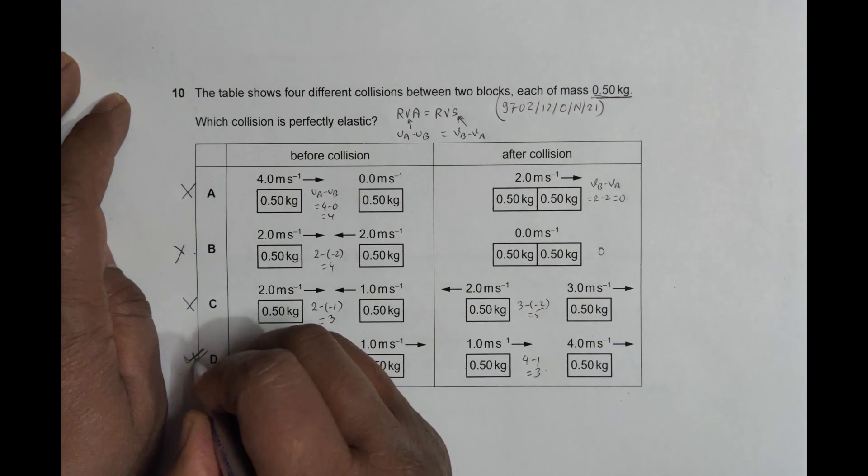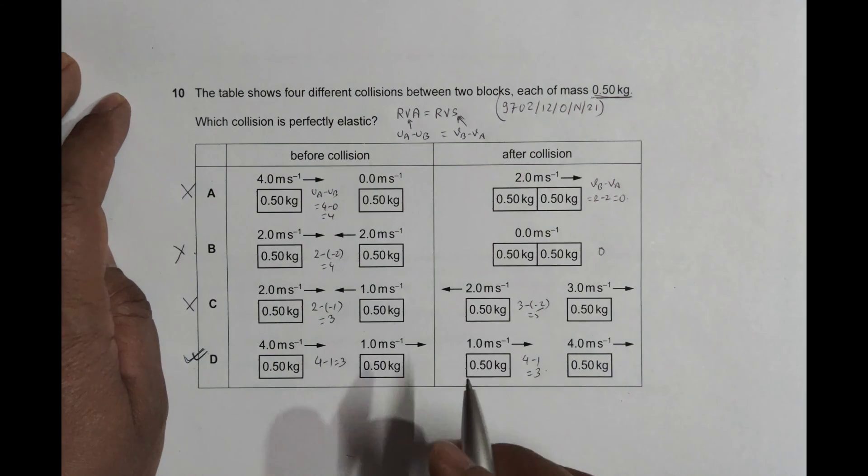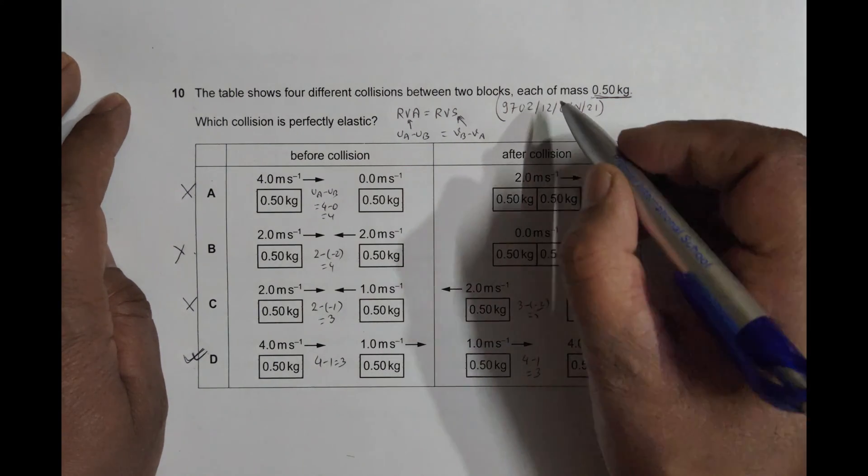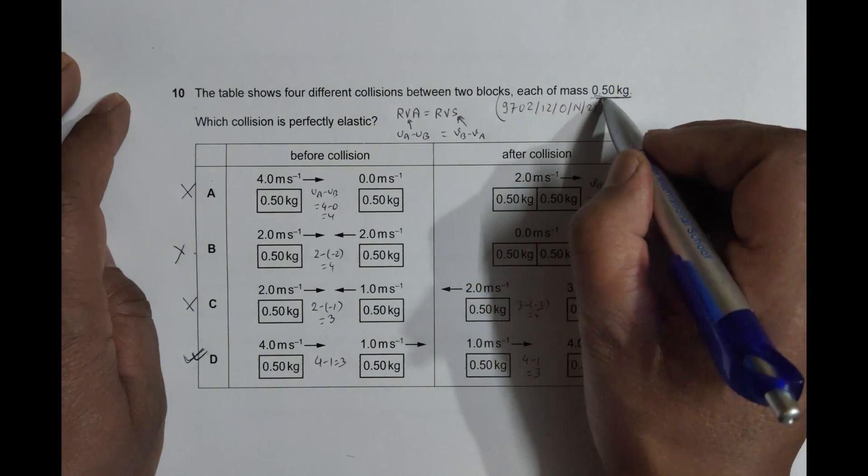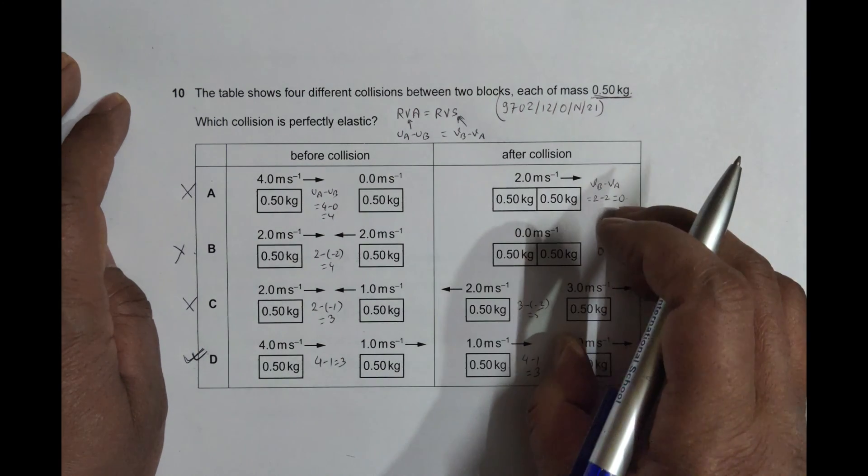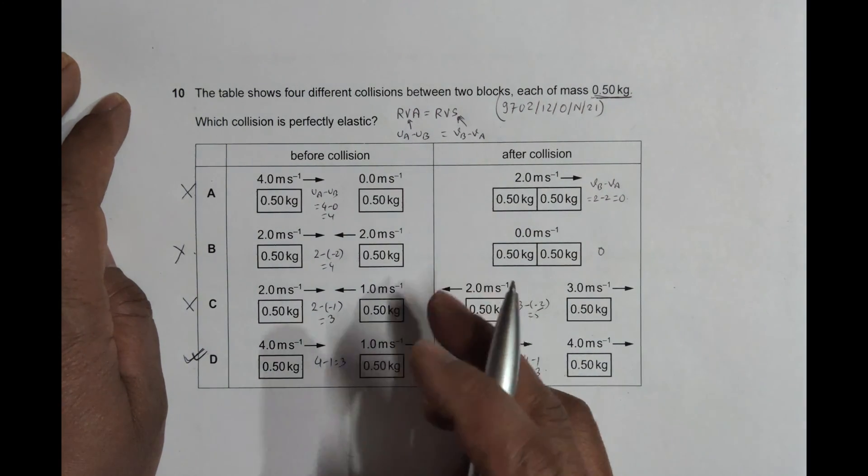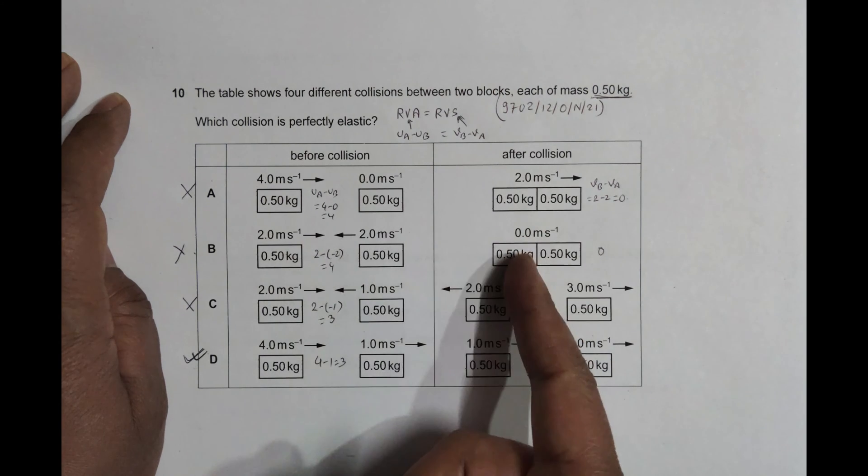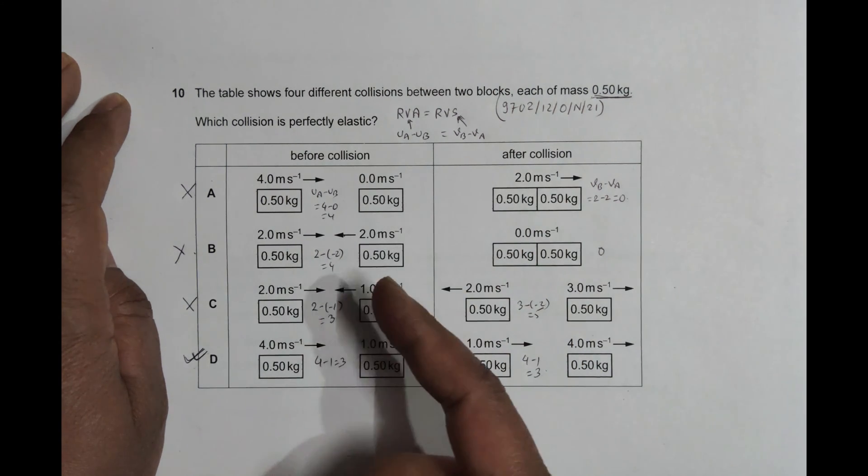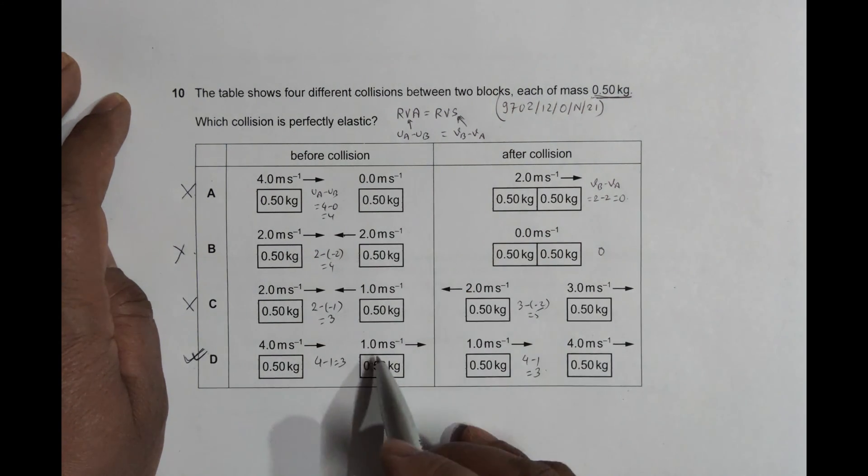In other words, each has mass 0.5 kg, so they have equal masses. When there are equal masses, there is an exchange of velocities. When there is elastic collision between equal masses, there is exchange of velocity, and here is that exchange.